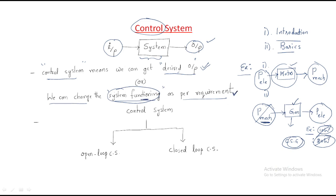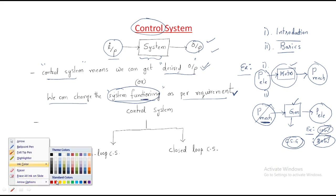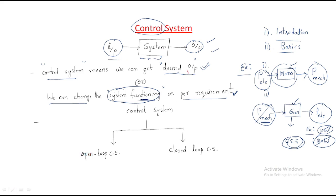So the difference between a system and a control system: a system simply takes input and gives output, but a control system gives the desired output. A control system is of two types: one is the open loop control system and another one is the closed loop control system.